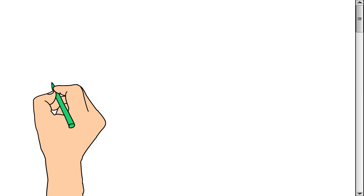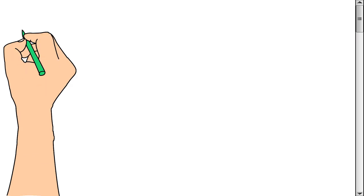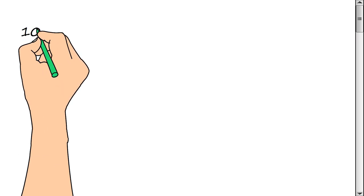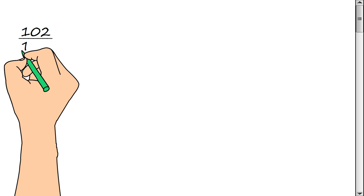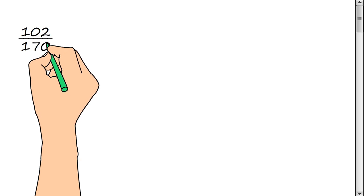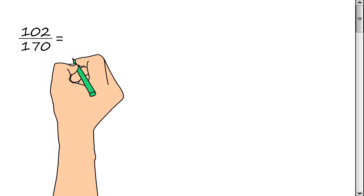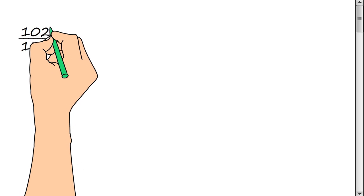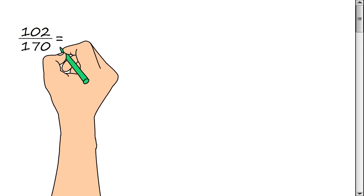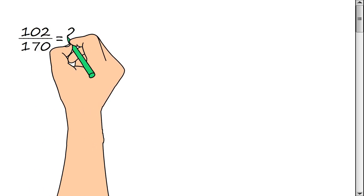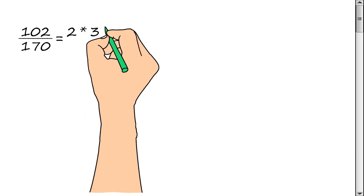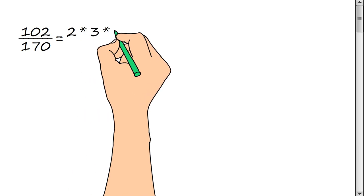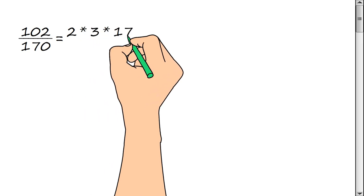We need to reduce the fraction 102/170ths. We represent the numerator of a fraction as a product of prime factors: 2, multiply by 3, multiply by 17.